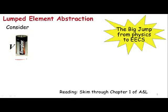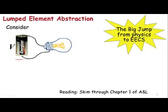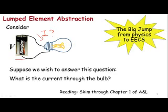So suppose I have a battery here that supplies a voltage V, and I connect that to a light bulb. And let us say that I wish to find out the current I that will flow through the bulb as a result of connecting the light bulb to the battery. I don't want to find out anything else — all I want to know is what is the current through the bulb.